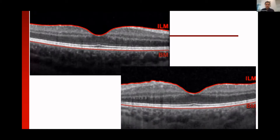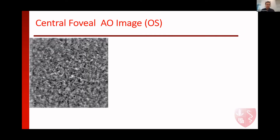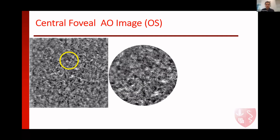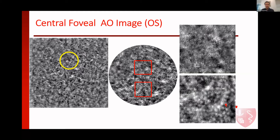Let's have a look at the OCT of both eyes — you can see there is no abnormality and it seems unremarkable. Now, looking at the AO image of the left eye, this is the central foveal AO image. Look at the central part — the cones are visible. I pick up the area at the margin between normal and puffy cones. Here you can see the normal cone mosaic, and here you can see the enlarged, visible cones.